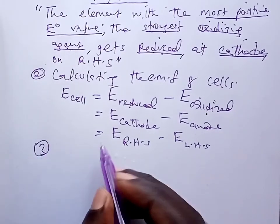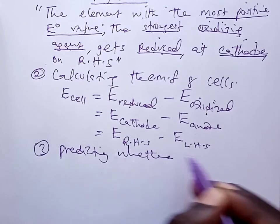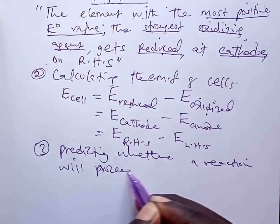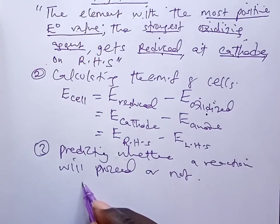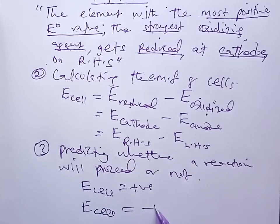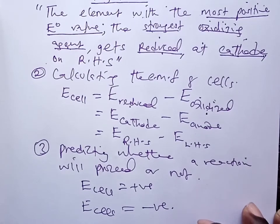The third use of standard electrode potentials is to predict whether a reaction will proceed or not. If the calculated E cell is positive, the reaction will proceed. If E cell is negative, the reaction will not proceed. With that, let us now go to the year 2001 chemistry paper 2, question number three.